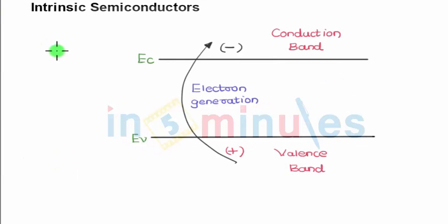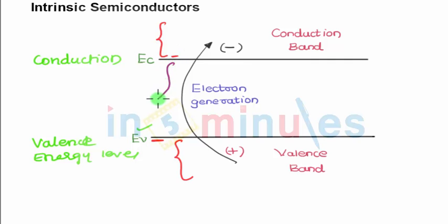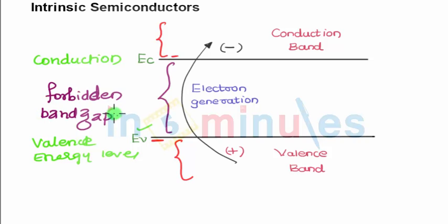From the diagram, you can see the conduction energy level and valence energy level. EV is the maximum energy of the valence band, and EC is the minimum energy of the conduction energy band. The region between the conduction band and the valence band is called the forbidden band gap. The band gap energy, denoted by EG, is the difference between the conduction band and the valence band. Electrons cannot exist in this region between the valence and conduction bands.